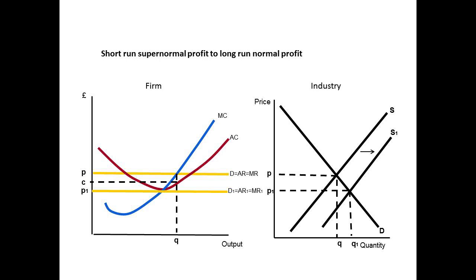Now, when the firm profit maximises, it produces where MC equals MR1, which gives us quantity Q1. We already know the price is P1. We can find the cost where the dotted line from Q1 meets the AC curve, which is at the same point as P1, meaning P1 and C1 are the same, and therefore a normal profit is being made.